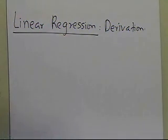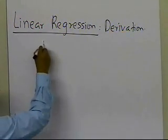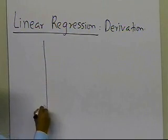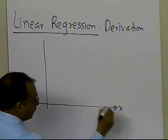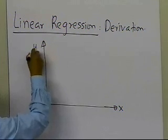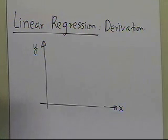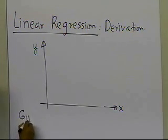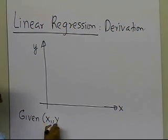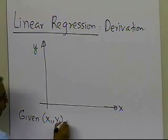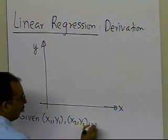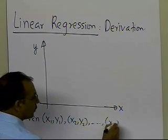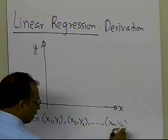Now, what regression is all about is that you are trying to best fit some given data. So basically you are given certain data points — let's suppose (x1, y1), (x2, y2), all the way up to (xn, yn) — so you're given, let's suppose, n data points.